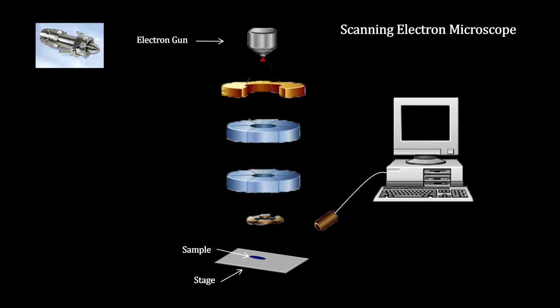An electron gun heats up a metal, such as tungsten, to a temperature where it releases its electrons. An anode with a large charge accelerates the electrons to a very high speed to improve their resolving power.